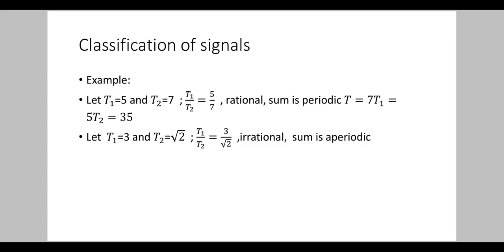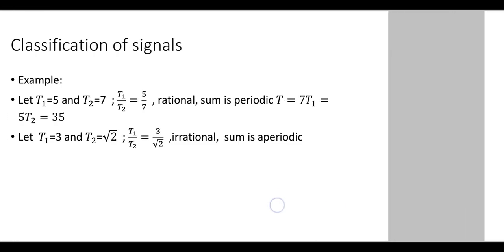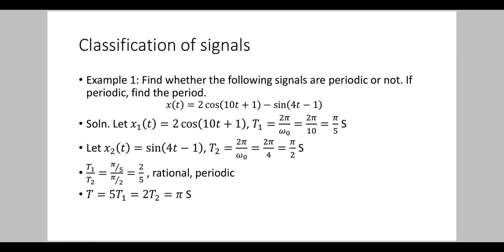Hope it is clear. Let us see some more examples. Example 1: Find whether the following signals are periodic or not. If periodic, find the period. x(t) = 2cos(10t + 1) − sin(4t − 1).